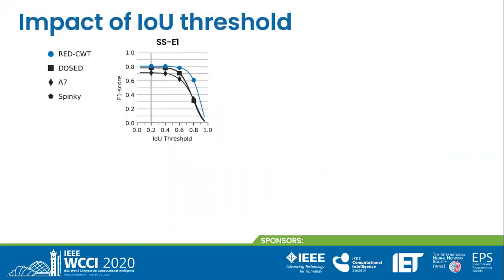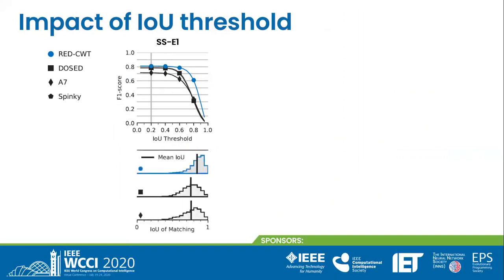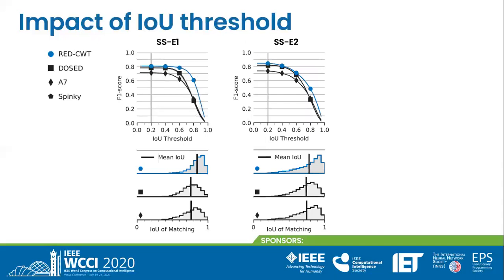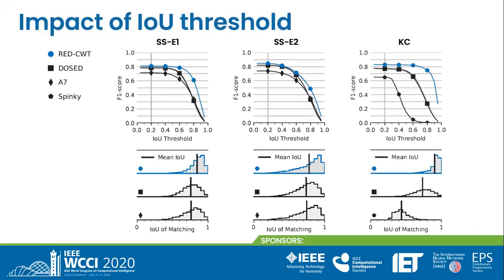In sleep spindle detection according to expert 1, we see that the F1 score is stable for small IOU thresholds. However, the performance of our model is more robust to higher thresholds, which means that our detections have more accurate delimitations. It is more visible when we look at the histogram of the IOU values of all matchings. Here, our distribution is closer to 1, with a higher mean IOU. Similar observations apply to sleep spindle detection according to the second expert. However, the F1 score is not as stable as before because the inter-expert agreement has more variation. The inter-expert agreement of our model is remarkably better in K-complex detection. The context needed around a K-complex for accurate delimitation is larger than for sleep spindle detection, where the oscillatory activity is faster. The large difference with respect to baselines suggests that our model makes better use of context.